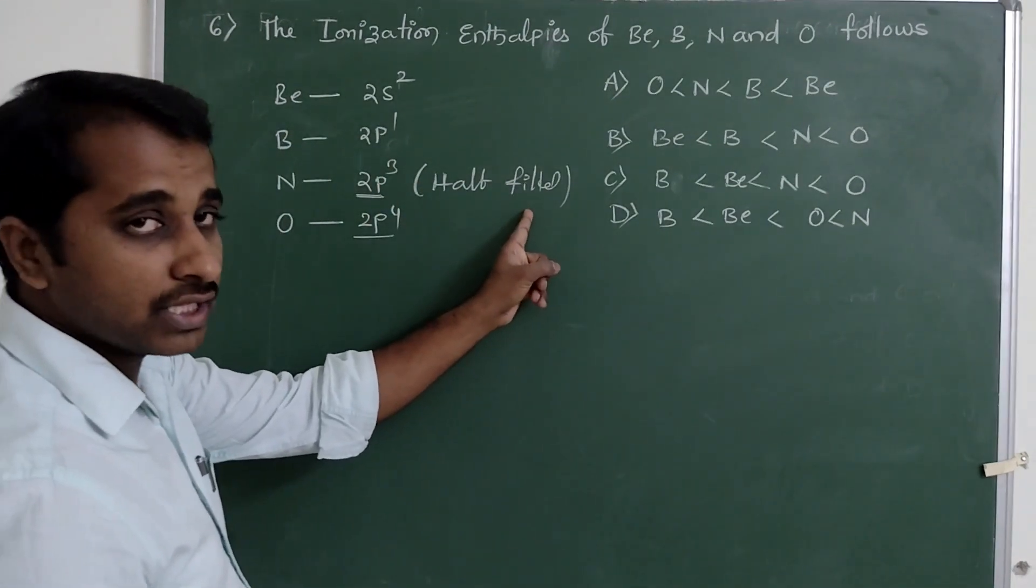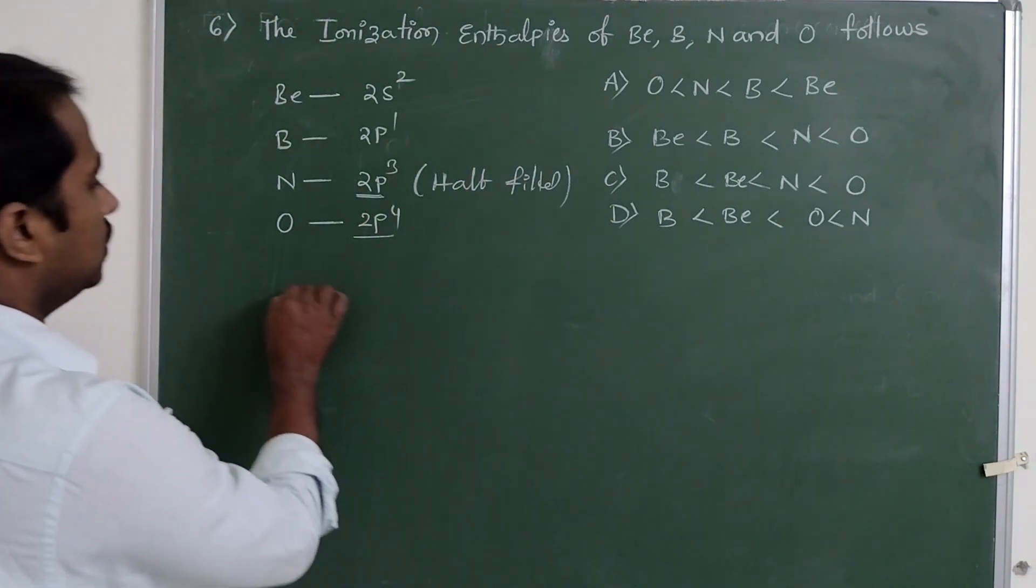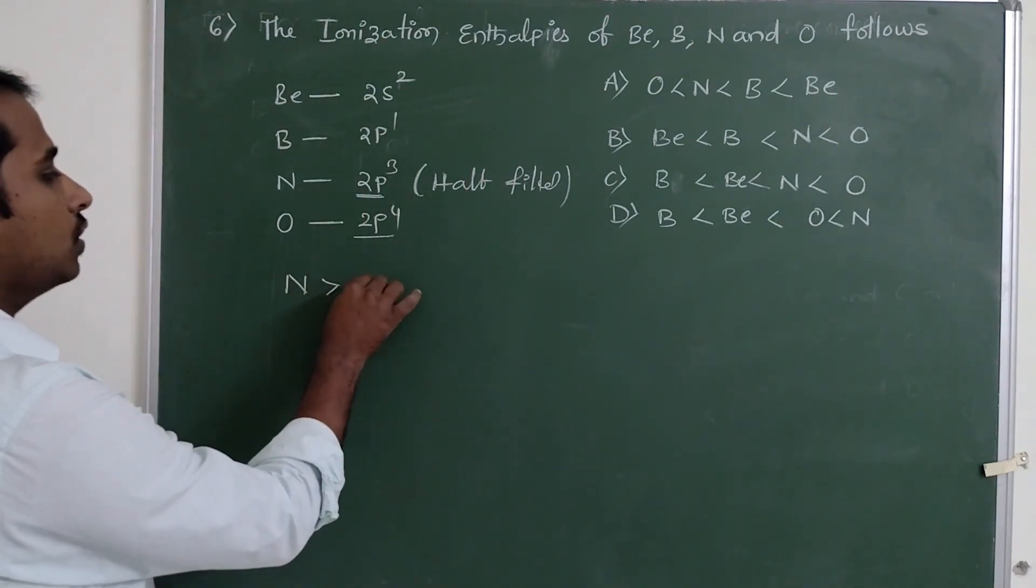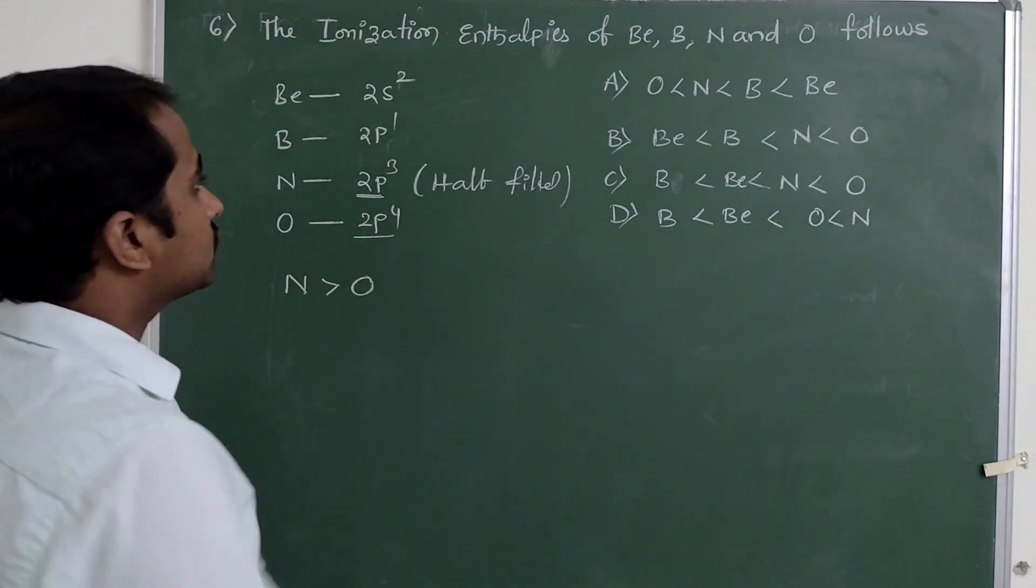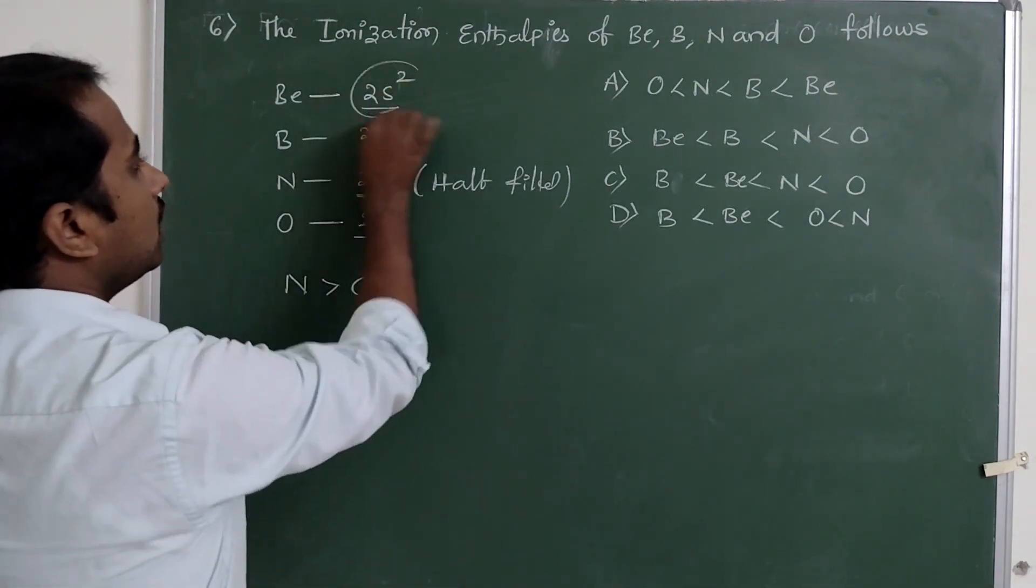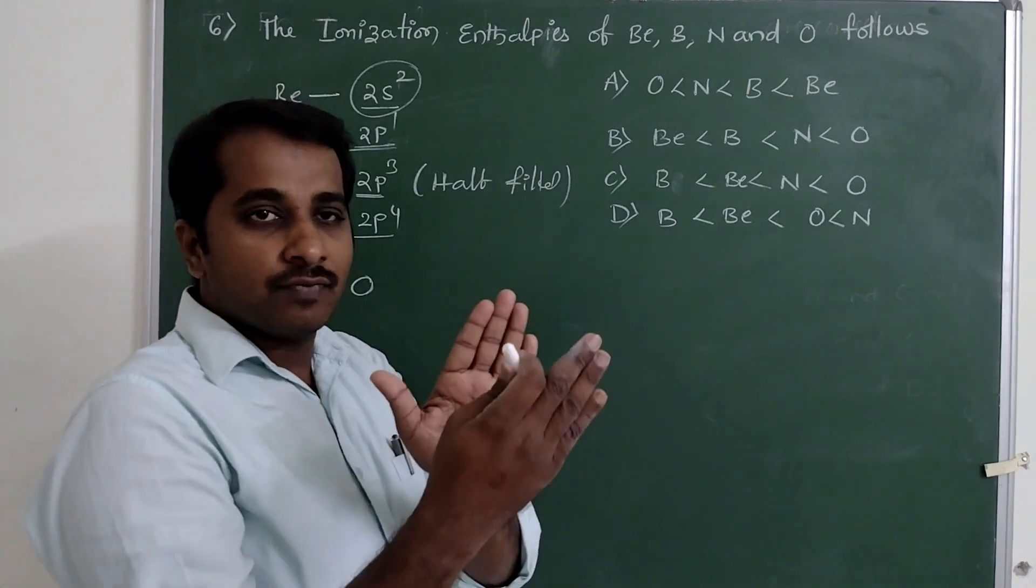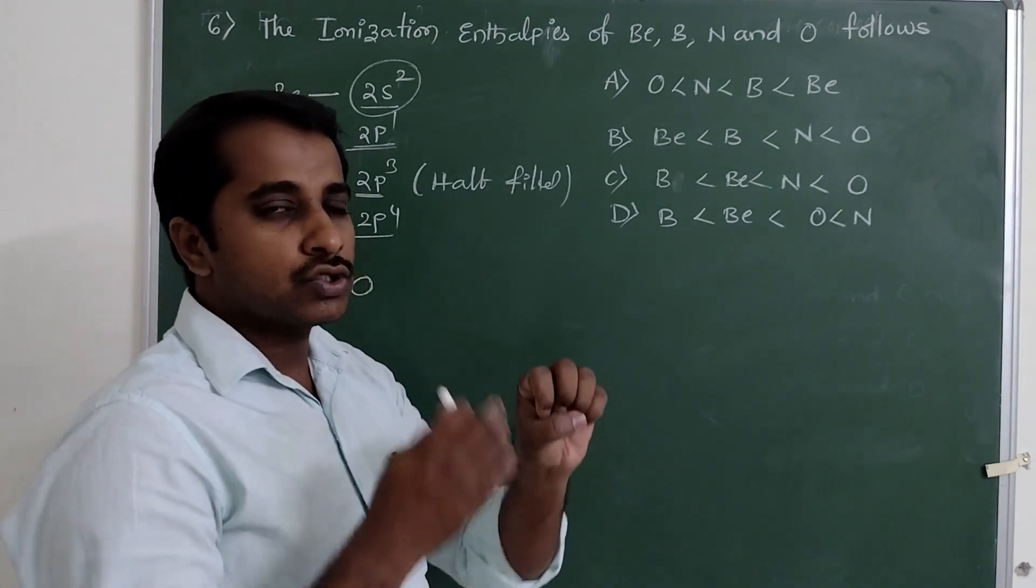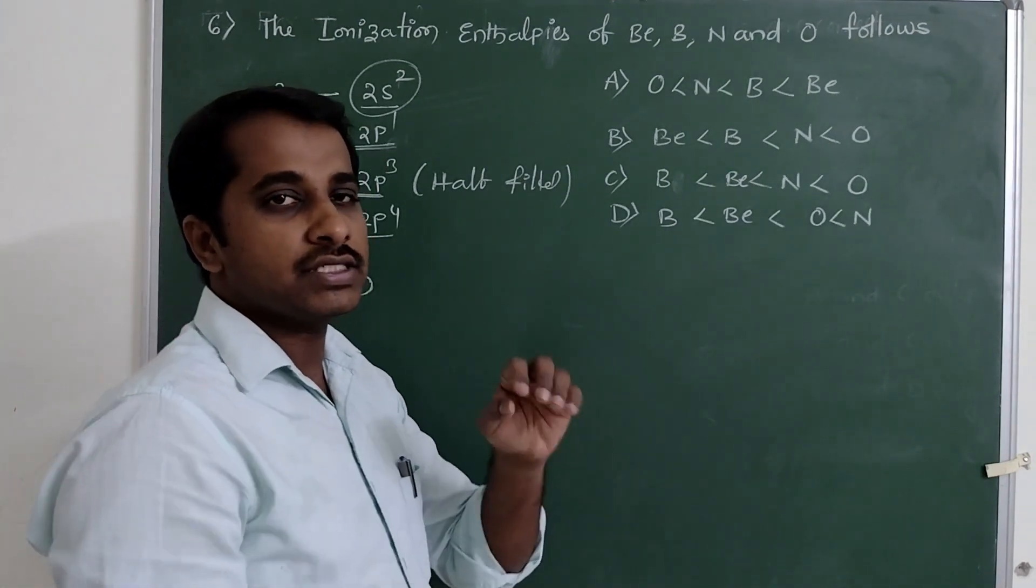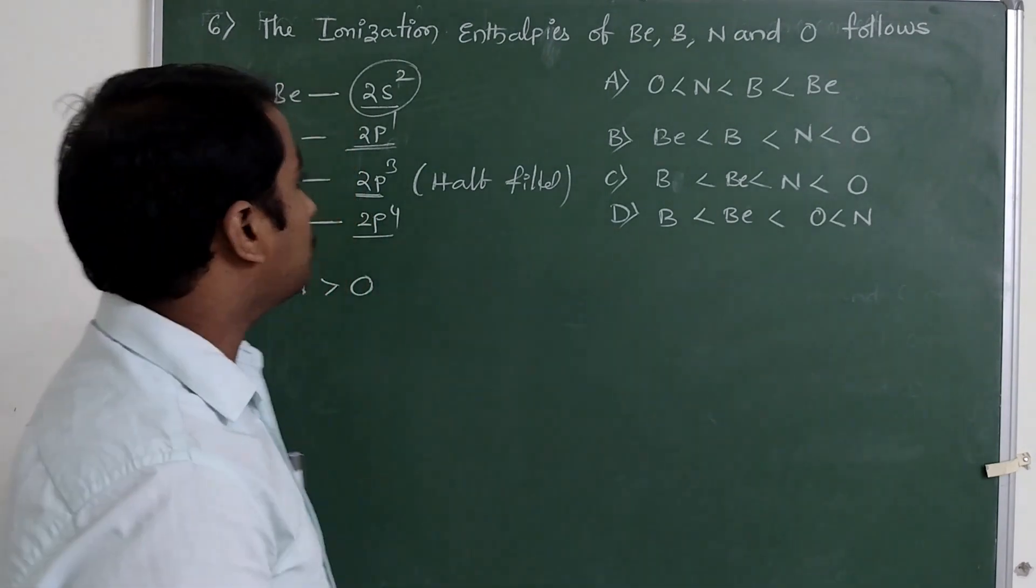So generally nitrogen is more than oxygen. Coming to 2s² and 2p¹, 2s² is very close to the nucleus, so more nuclear attractions are present on 2s². Based on that, beryllium is more than boron.